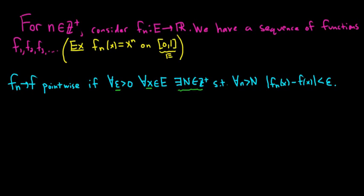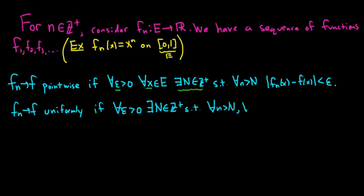Now let's look at the definition of uniform convergence. So we'll say that the sequence converges to f uniformly if it's almost the same but not quite. So for all epsilon greater than 0, there exists a positive integer N such that for all little n bigger than N and for all x in E, we have the same thing. We have the difference between f sub n of x and f of x, and that's less than epsilon.